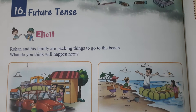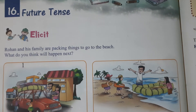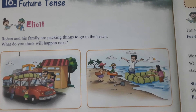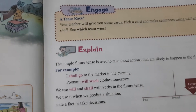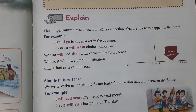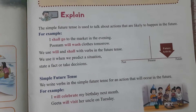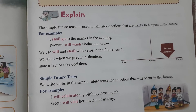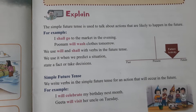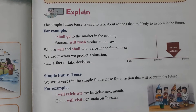Today we will see future tense. We have already seen present tense and past tense. The simple future tense is used to talk about actions that are likely to happen in the future. For example: I shall go to the market in the evening.